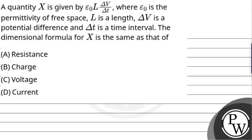Hello, let's read out the question. The question says: a quantity X is given by epsilon-naught times L times delta-V by delta-t, where epsilon-naught is the permittivity of free space, L is length, delta-V is potential difference, and delta-t is time interval. The dimensional formula for X is the same as that of — so we have to identify which quantity X represents out of the four given options.